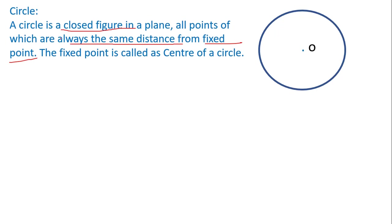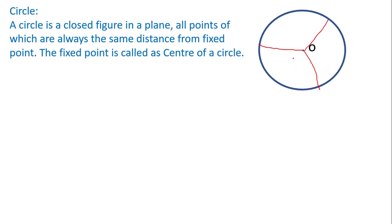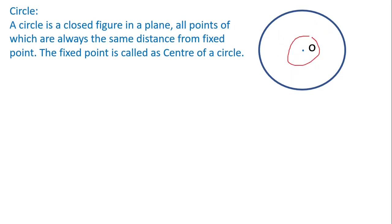All the points always lie at the same distance from a fixed point. So if we take this circle, we consider one fixed point. From this point, if you take any point on the circle and join it to the center, that distance is the same as joining any other point on the circle to the same fixed point. From any point on the circle, the distance to the fixed point remains the same.